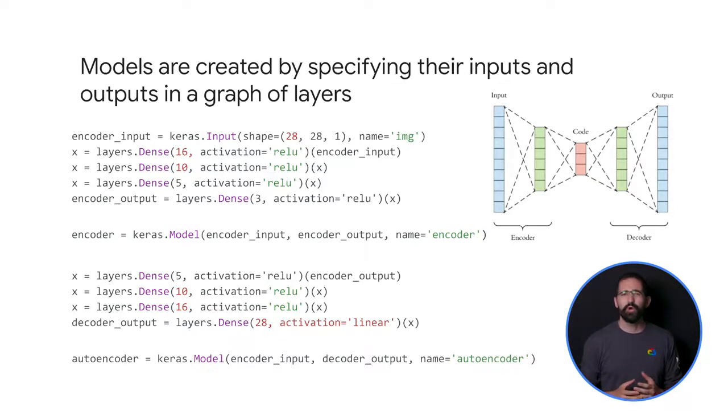This is an example of what code for an autoencoder might look like. Notice how the operations are treated like functions with the outputs serving as the inputs in the subsequent layers.